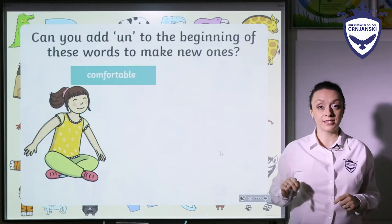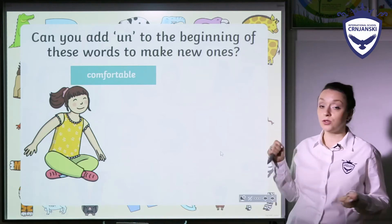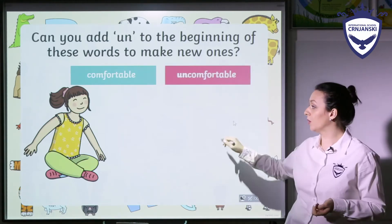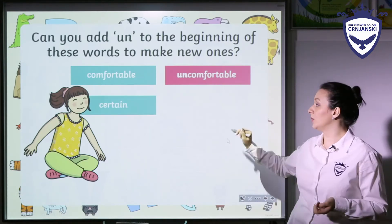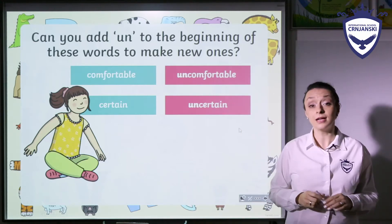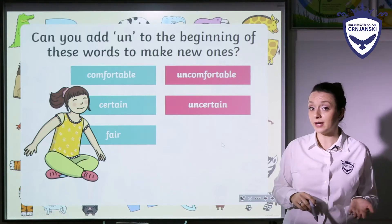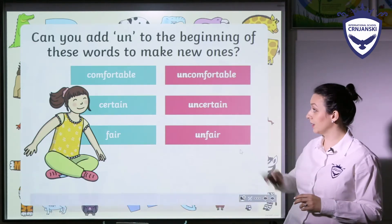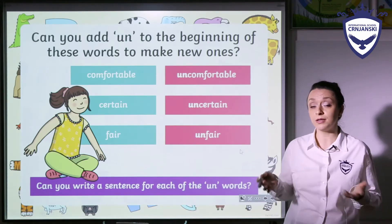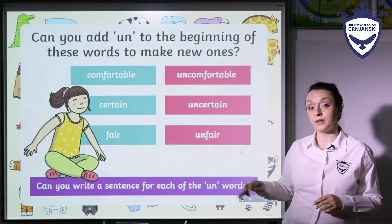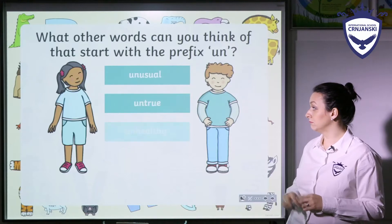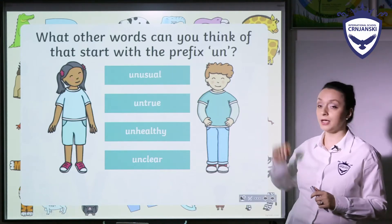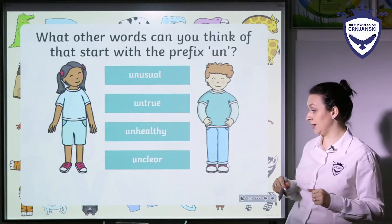So if you have for example a word comfortable, how can you make a new word by adding a prefix un? Simply — uncomfortable. Or you have a word certain, we can make a new word by adding un and we then have uncertain. If you have the word fair you can say it's so unfair when you add un as the prefix.